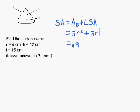So I get pi times 9 squared plus pi times 9 times 15. This gives me 135. So I get 81 pi plus 135 pi.